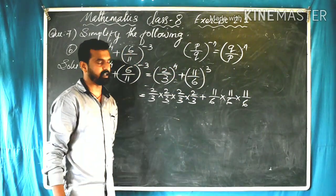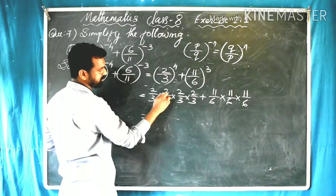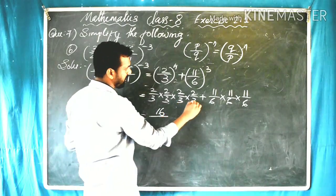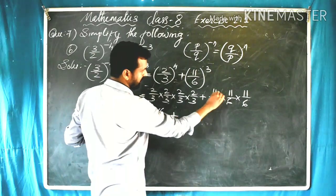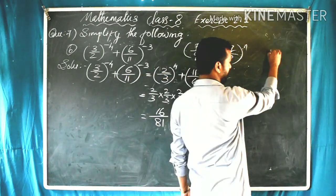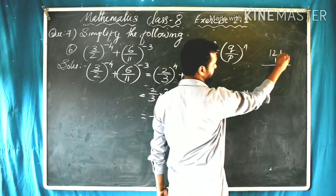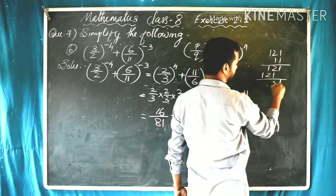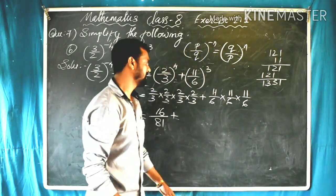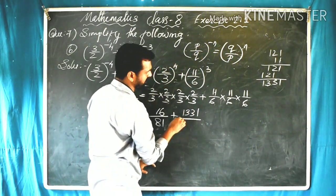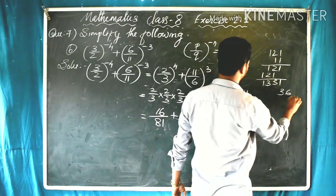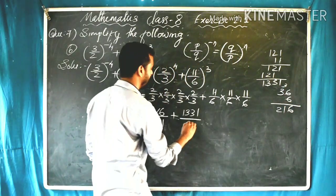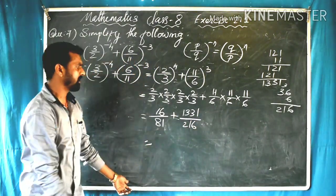Multiplying out: 2 by 3 raised to 4 gives 16 divided by 81. And 11 by 6 raised to 3 gives 1331 divided by 216. Now we have two rational numbers, 16/81 and 1331/216, which we need to add by taking the LCM of the denominators.